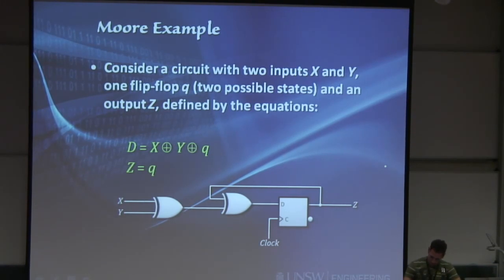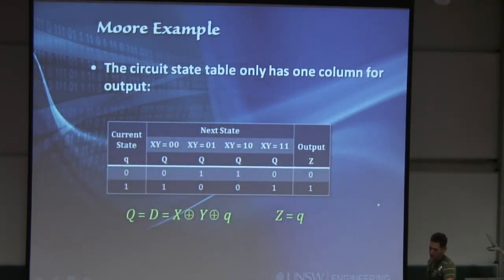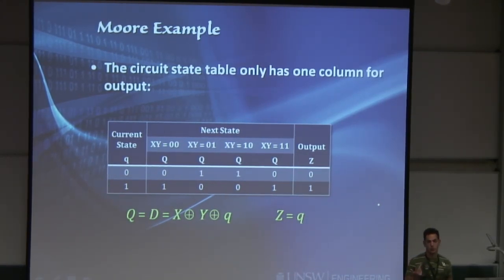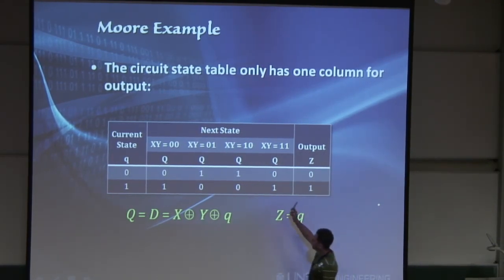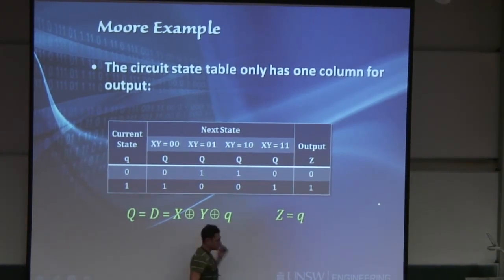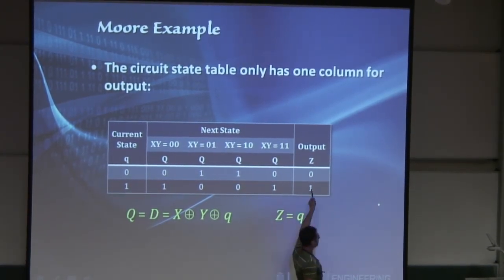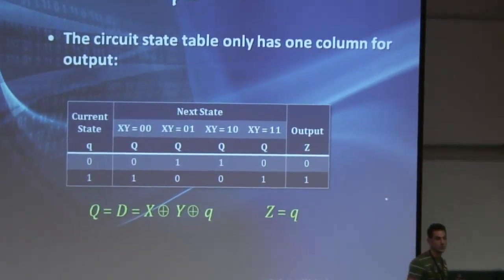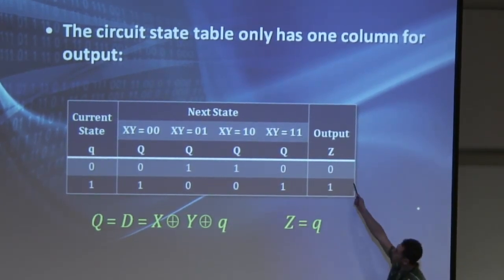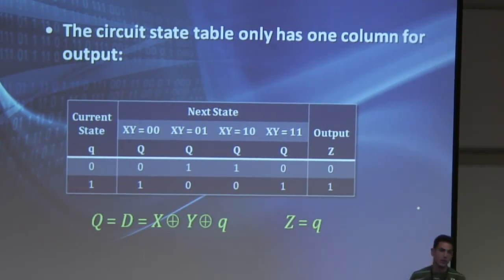Now in this example we can build a state transition table. If yesterday we only had one input — two input combinations — here we have two inputs X and Y, which gives us four columns for the possible next state for every input combination. Also notice: if yesterday we had a few columns for the output depending on the input combinations, now we only have one column for the output, because the output is only a function of the current state. It will be the same output regardless of whatever inputs we get.